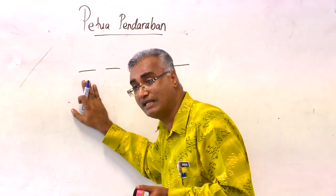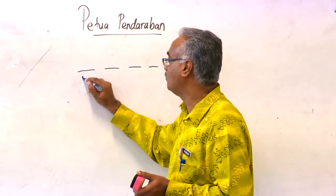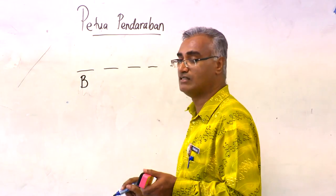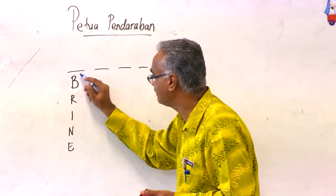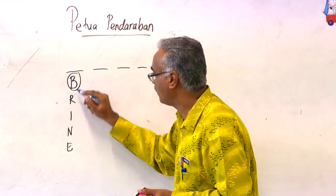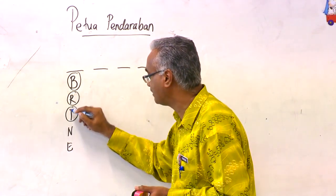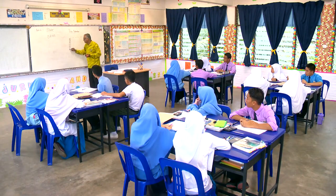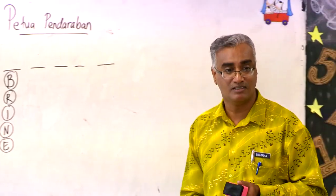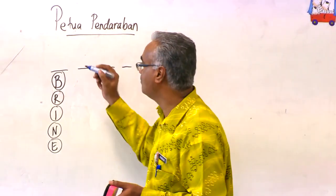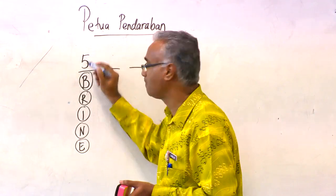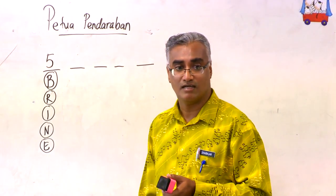Di petak pertama ini, saya boleh meletakkan huruf B. Apa lagi boleh letak? R, I, N, dan E. Seolah-olah inilah huruf yang saya boleh letakkan di petak pertama. Di sini ada berapa pilihan? 5. Saya boleh letak mana-mana satu yang saya suka. Jadi saya ada 5 pilihan.